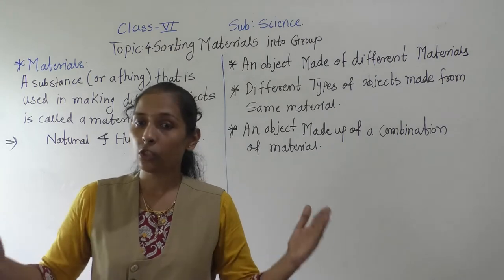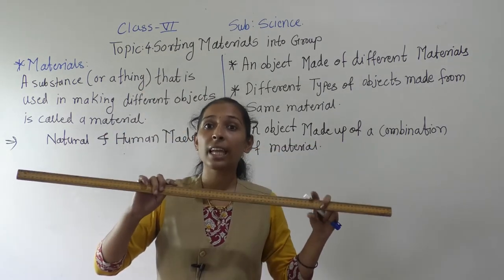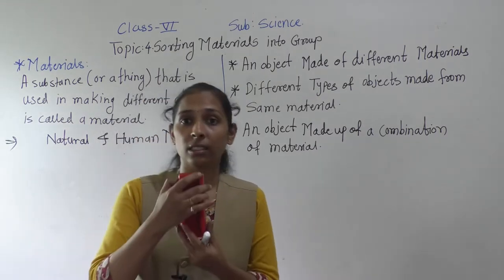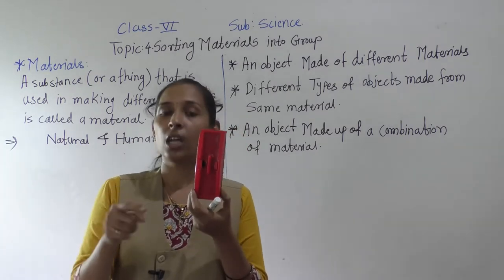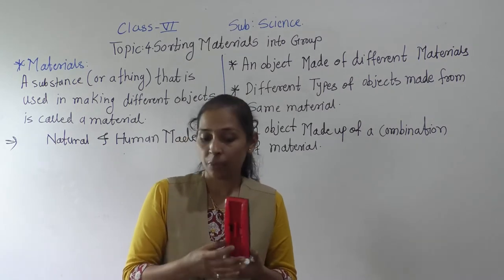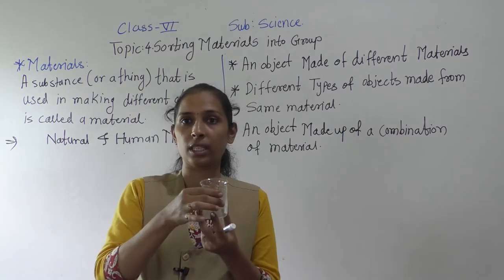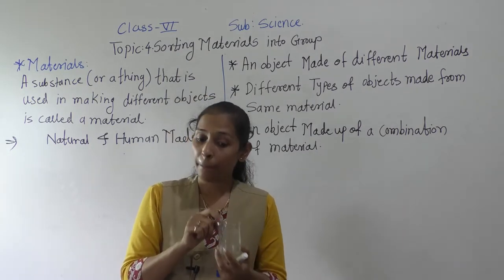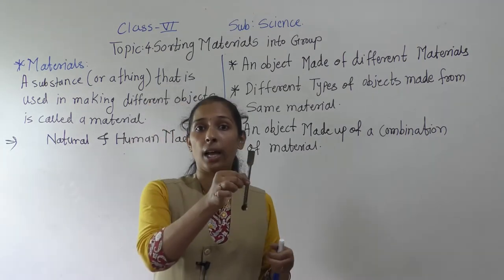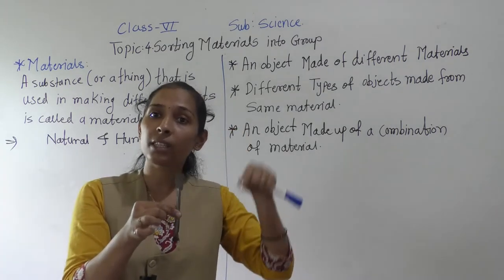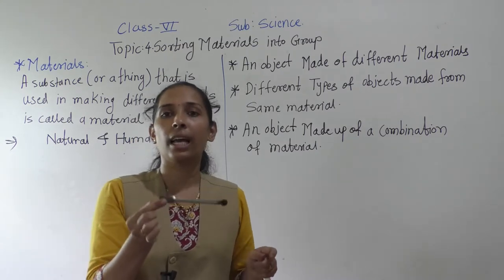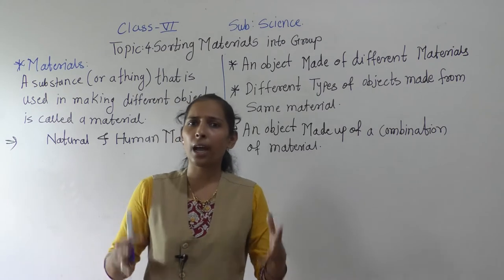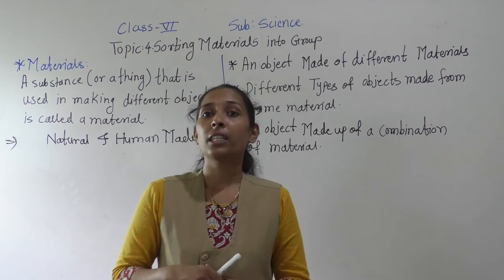According to the objects, the material can change. This scale is made up of wood, so wood is the material from which this scale is made. This duster is made from plastic, so plastic is the material from which this duster is made. This glass beaker — glass is the material from which this beaker is made. This spatula is made up of steel, so steel is the material from which this spatula is made. There are so many different materials around us — copper, iron, cotton, silk, plastic — all are different materials.